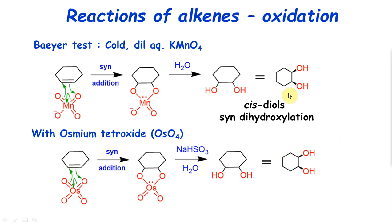Osmium tetroxide (OsO₄) gives the same result as cold dilute KMnO₄ — both give cis-diol. OsO₄ also attaches in a similar manner forming a five-membered ring, giving syn addition. Just know that a double bond gives a cis-diol with either reagent. For a symmetrical alkene, the product is a symmetrical cis-diol, which is a meso compound.